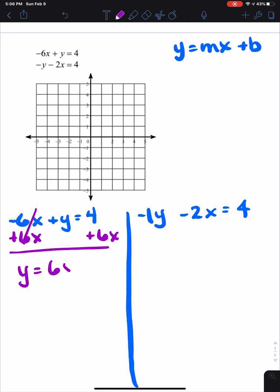So I have Y equals 6X plus 4. So my slope is 6 over 1 for my rise and run, my B value is positive 4.